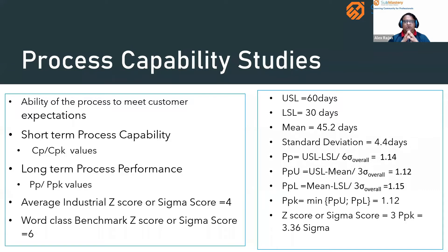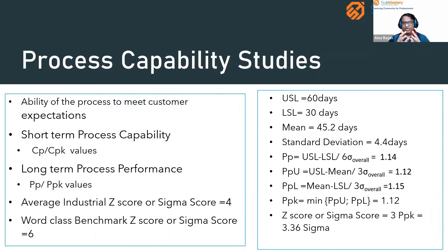Process capability is the ability of the process to meet customer expectations. It is given by short-term process capability studies or long-term process performance values. CP and CPK give the short-term process capability. Short-term means we are looking into the ability of the process to meet customer expectations over a shorter period — from one day to another.